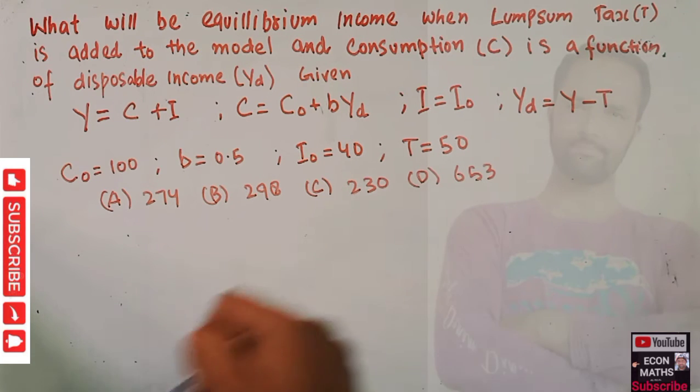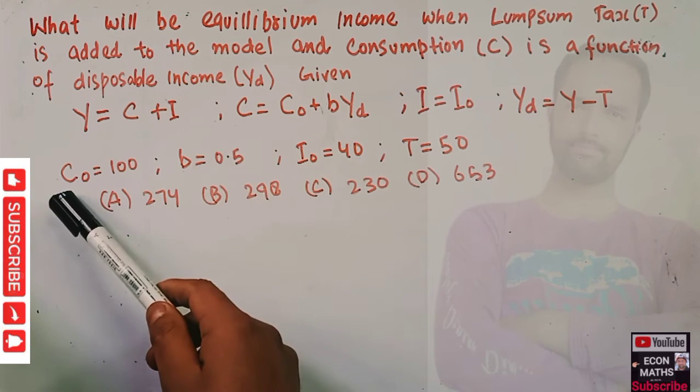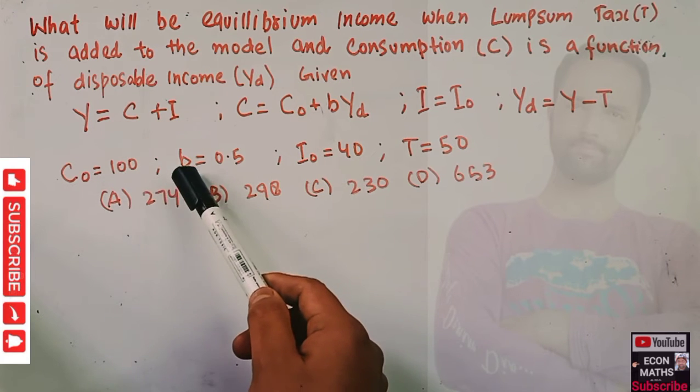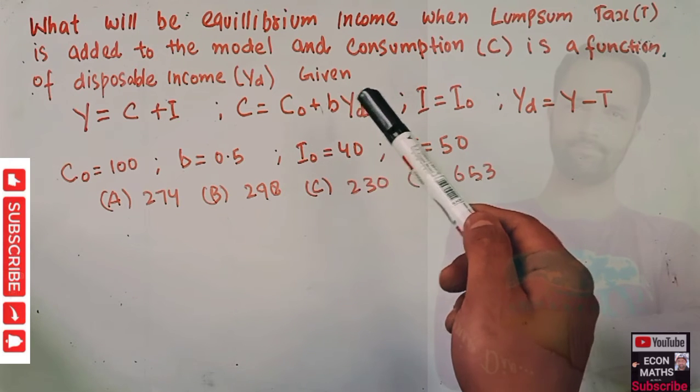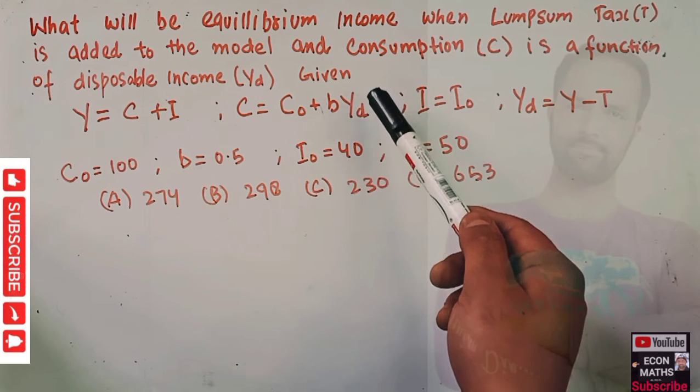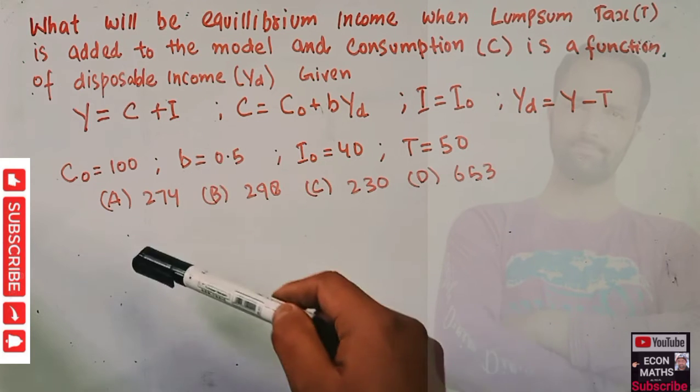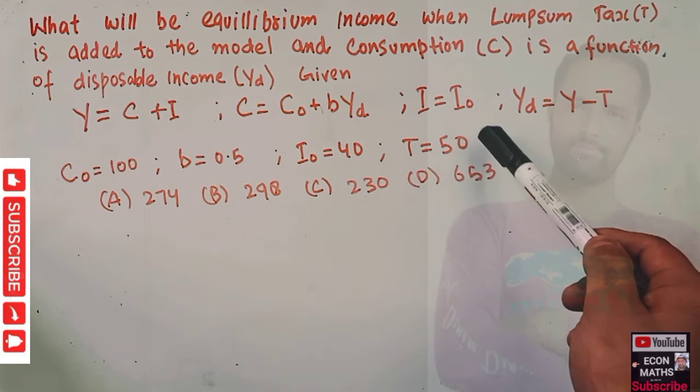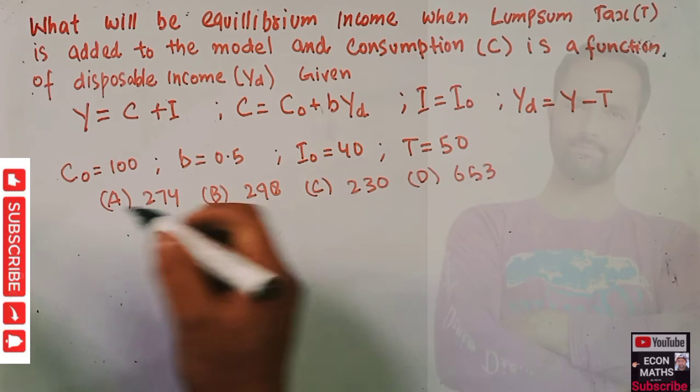We are given values: C naught, autonomous consumption, is 100. B is 0.5, which is the marginal propensity to consume—when income increases by one unit, consumption increases by 0.5 units. Autonomous investment is 40 and lump sum taxes 50. The options are 274, 298, 230, and 653.